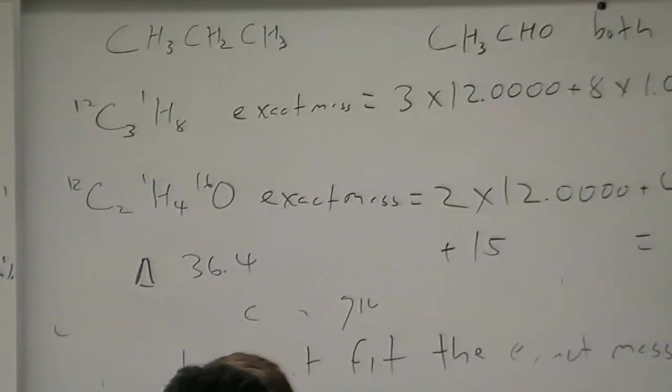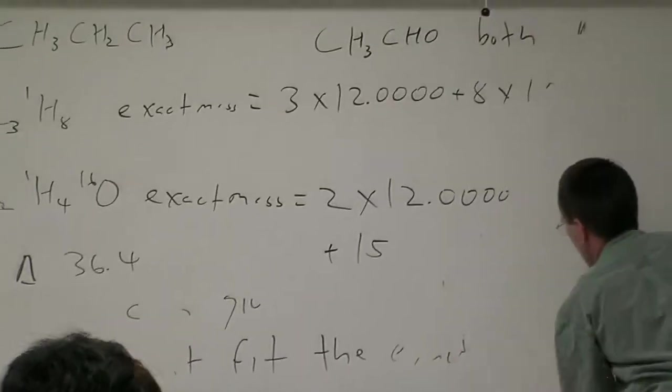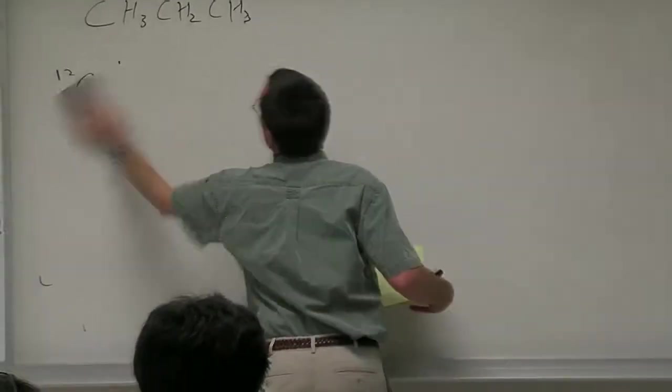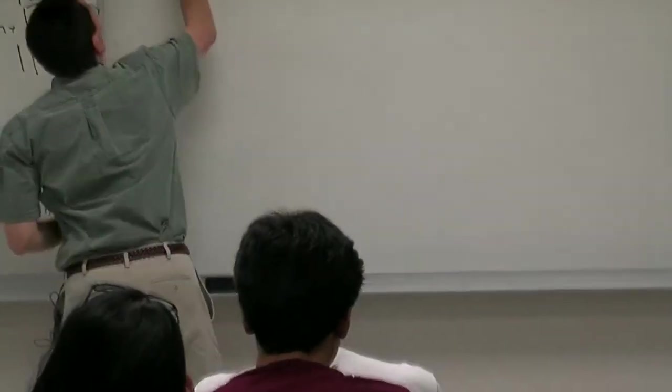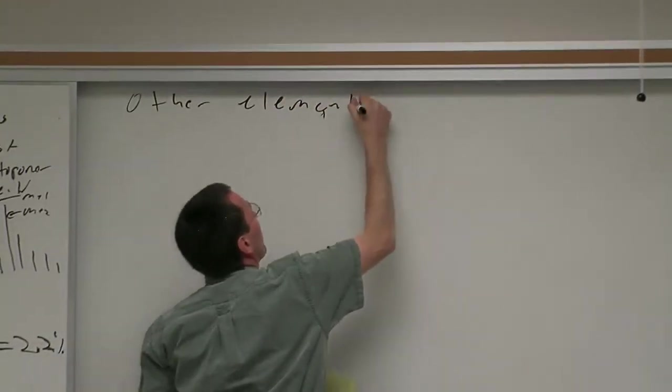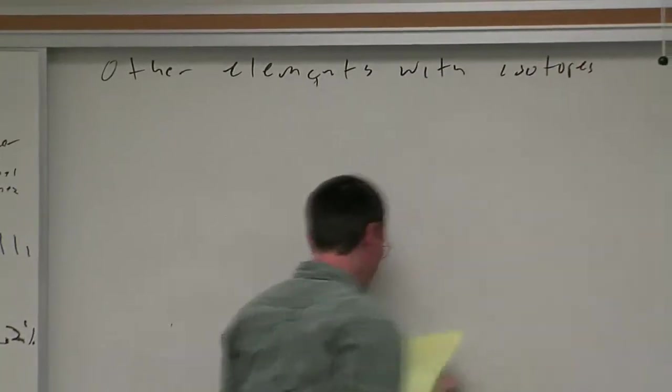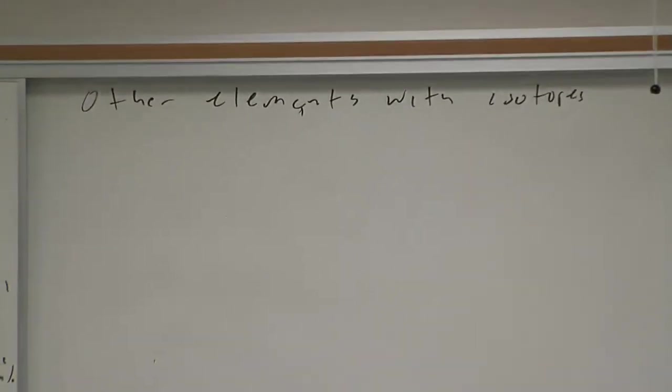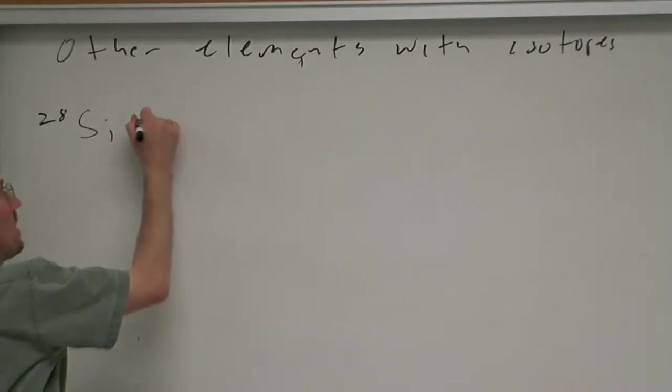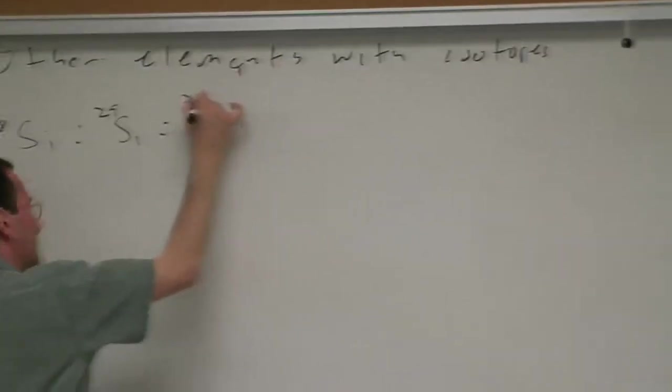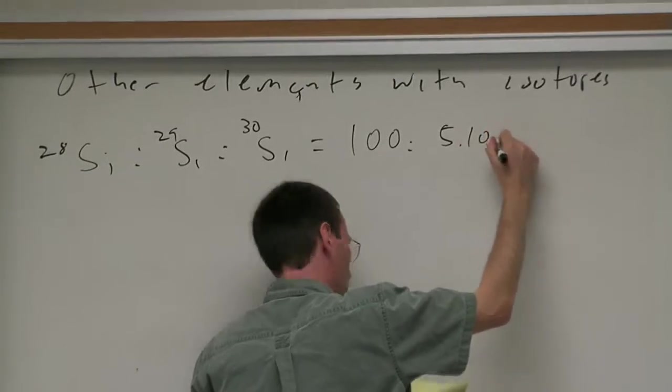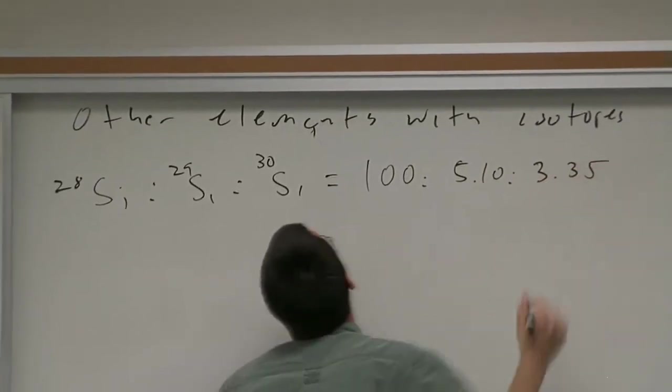Let's take a look at some other elements with isotopes. We've already talked about carbon, hydrogen, nitrogen, oxygen, all common in organic compounds. Let's talk about silicon. Silicon consists of an isotopic mixture of silicon 28, silicon 29, silicon 30. The ratio is 100 to 5.10 to 3.35.